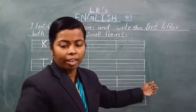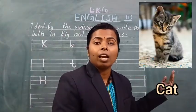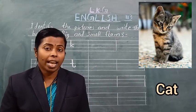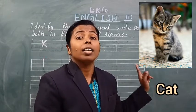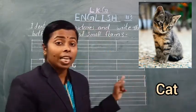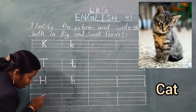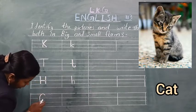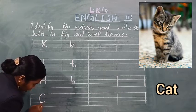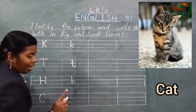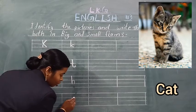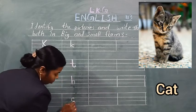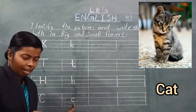See the next picture. This is a cat. Spell the word cat: C-A-T. Cat. Cat ka spelling kya hai? C-A-T. See the first letter — C. C for cat. Capital C kaise likhenge? Ek bada curve banana hai, first line se third line tak. This is capital letter C. Small letter C likhna hai — in do line mein likhenge.